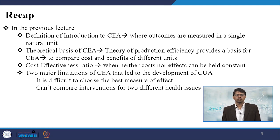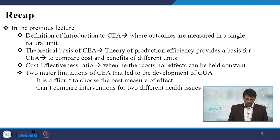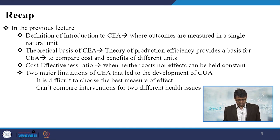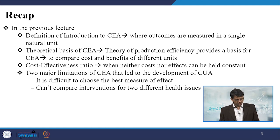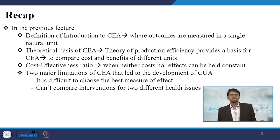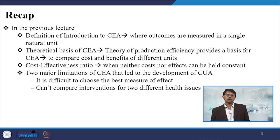We started with the introduction and also discussed the theoretical basis of CEA, which provides the basis to compare the cost and benefits of different units. The cost-effectiveness ratio is important because neither the cost nor the effects can be held constant. We also talked about the role of the cost-effectiveness ratio. There are two important limitations of CEA that led to the introduction of cost utility analysis — it is difficult to choose the best measure of effect, and it cannot compare interventions for two different health issues at once.